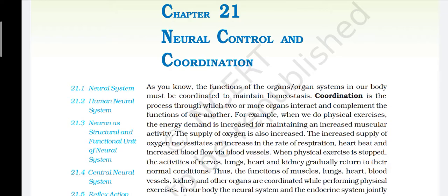The functions of the organ systems in our body must be coordinated to maintain homeostasis. Coordination is the process through which two or more organs interact and complement the function of one another. For example, when we do physical exercise, the energy demand is increased. For maintaining an increased muscular activity, the supply of oxygen is also increased, necessitating an increase in the rate of respiration, heartbeat, and increased blood flow via blood vessels. When physical exercise is stopped, the activities of nerves, lungs, heart, and kidney gradually return to their normal conditions.